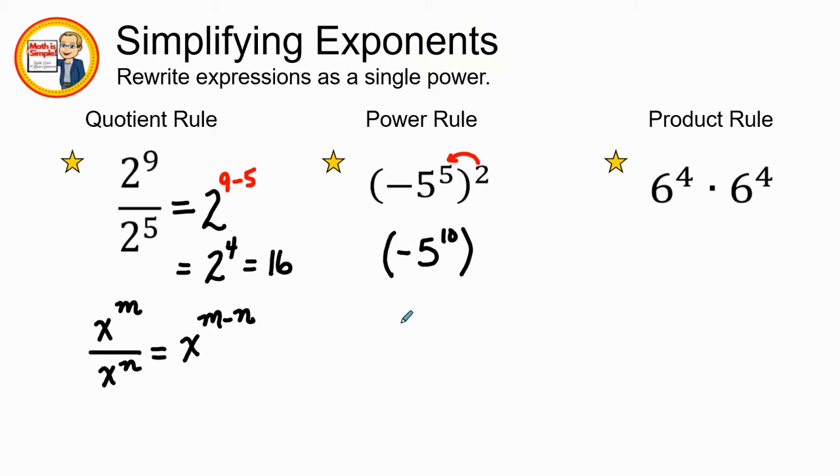Now I could rewrite it without the parentheses as negative five to the tenth power. When we simplify this further, we want to make sure that we keep the negative five together. We don't want to use five to the tenth power and just tack a negative to the answer.